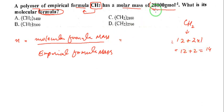Now this is the empirical formula mass. The molecular formula mass is already given in the question: 28000 grams per mole divided by 14 grams per mole. When you divide 28000 by 14, you get 2000.